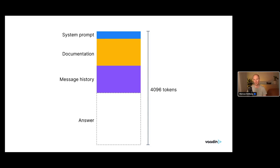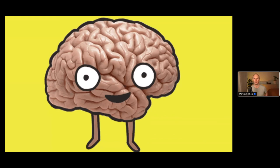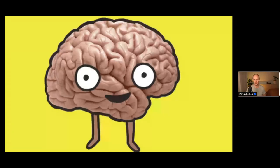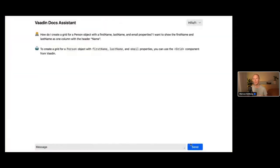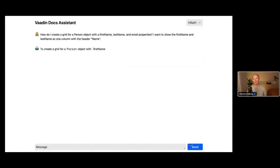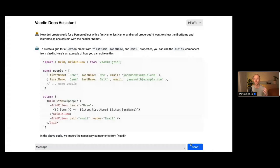Once we've constructed this list of messages, we call ChatGPT. It can take 10s of seconds to generate the full response. If we waited for the entire thing, it would not be a great user experience. So instead, as the answer is streaming into our server, we want to show that answer all the way to the user in real time.